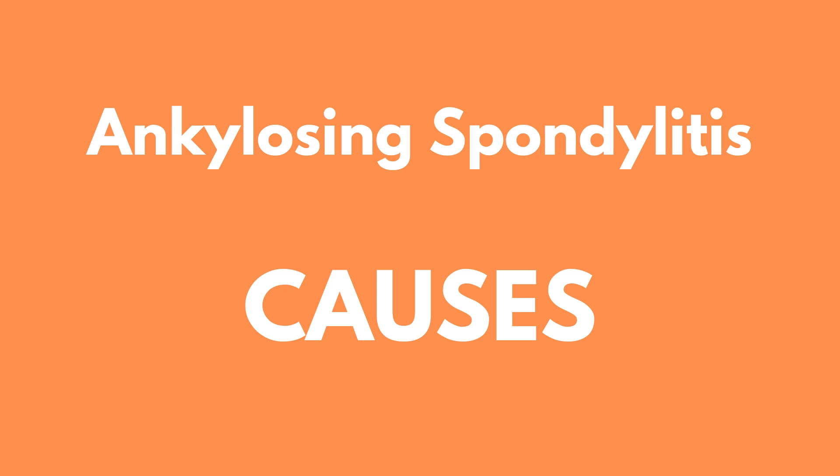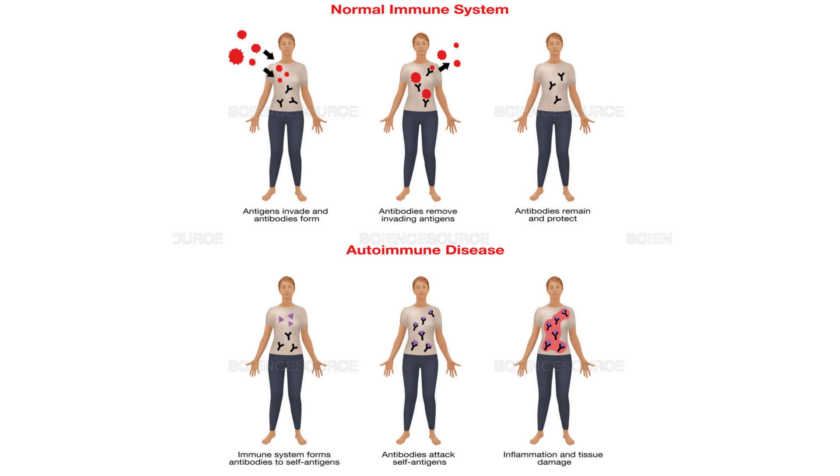Let's talk more about the cause of ankylosing spondylitis. AS is a rheumatic condition, meaning your immune system has developed a fault, goes awry, and begins to attack your own tissues — also referred to as an autoimmune disease. Many of these conditions are considered idiopathic, or of unknown cause. Sometimes it's the genes you're born with; other times it's the result of something like an infection. As of today, doctors and researchers are stumped on what exactly causes AS, which also means there is no known cure.